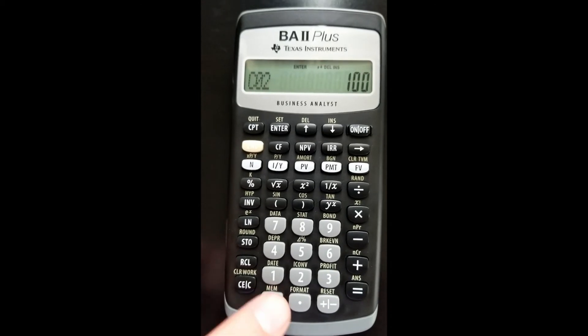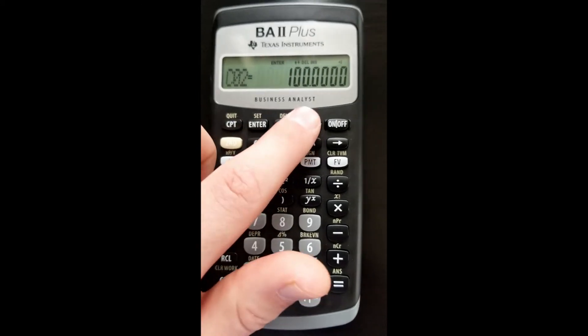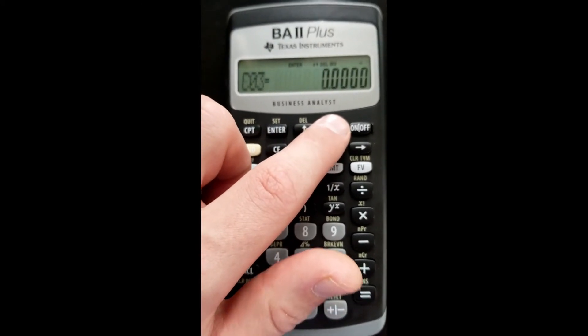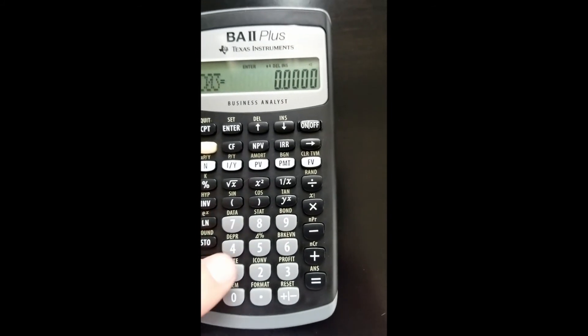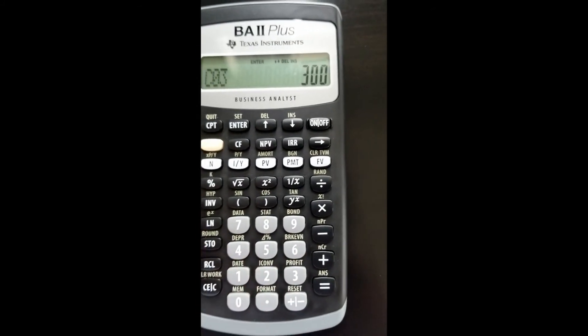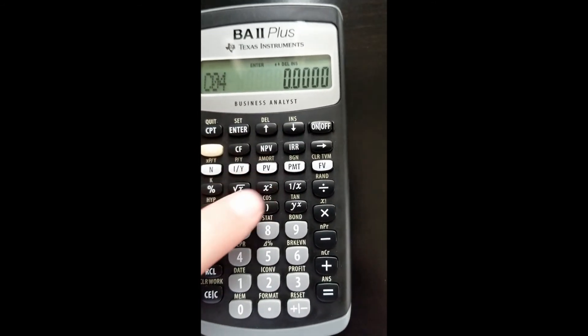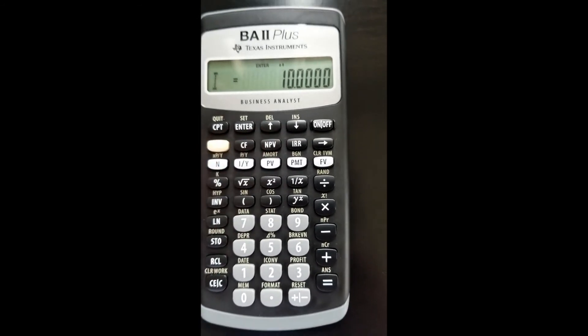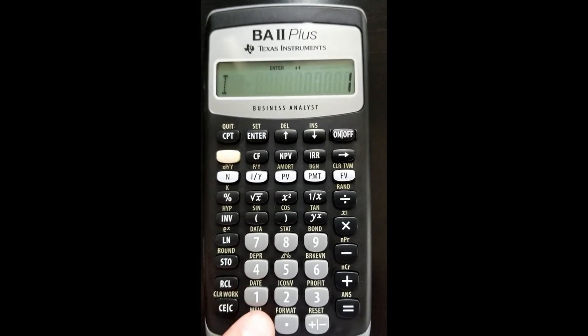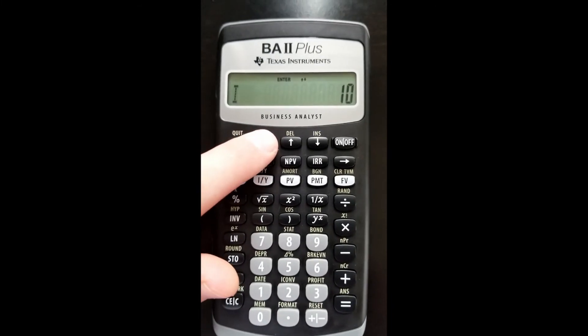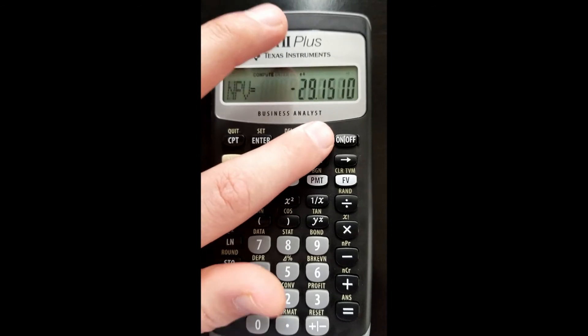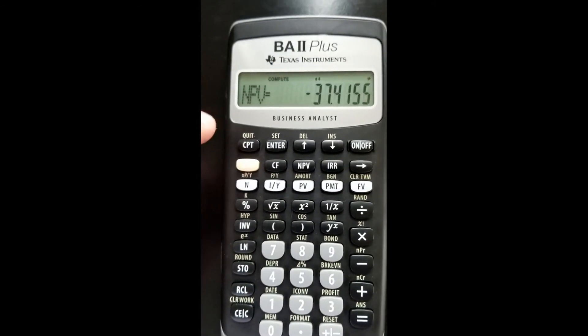Frequency is one. Cash flow two is 100, enter. Frequency should be one. Cash flow three should be 300, enter. Now hit the NPV button. Interest rate was 10, so type 10, hit enter, then down arrow and hit compute: -37.42. That's our NPV.